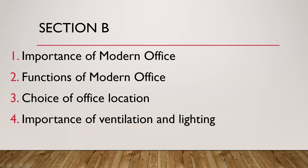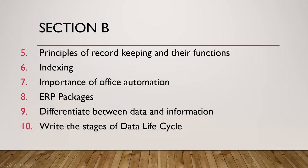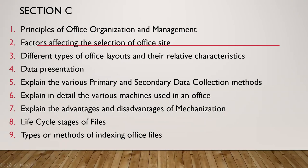Section B is for five marks. Questions include: explain the importance of modern office; functions of modern office; factors influencing the choice of office location; importance of ventilation and lighting; principles of record keeping and their functions; concept and importance of office automation; ERP packages; differentiate between data and information; write the stages of data life cycle — you have to draw and explain the data life cycle.